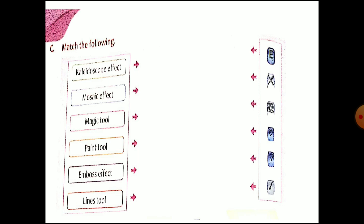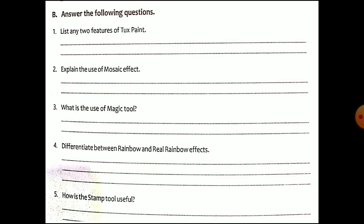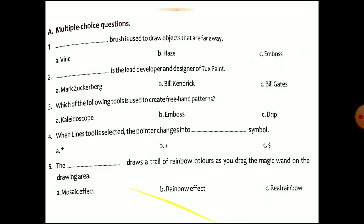After fill in the blanks, you will do match the following using: mosaic magic tool, paint tool, embossed tool, and line tool. Then answer questions such as: list any features of Tux Paint; explain the use of mosaic effect; explain the use of the magic tool; differentiate between rainbow and real rainbow effect; and explain how the stamp tool is useful. Do these exercises after watching both this video and the previous one.